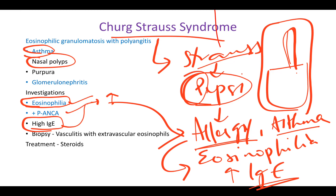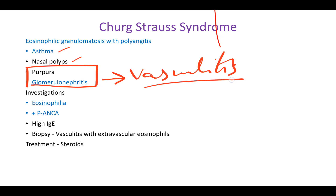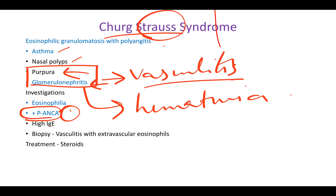Churg-Strauss syndrome symptoms: asthma, nasal polyps, purpura, and glomerulonephritis — these are almost common to all vasculitis syndromes, because in vasculitis your blood vessels are inflamed, eventually leading to skin and kidney issues. Glomerulonephritis leads to hematuria. Since Straws had Pepsi, P stands for Pepsi — so P-ANCA is the most specific and confirmatory investigation.